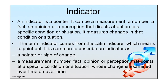It is common to describe an indicator as a pointer or sign of change — a measure, number, fact, opinion or perception that points at a specific condition or situation whose change is examined over time. It may be a number or it may be a narrative.